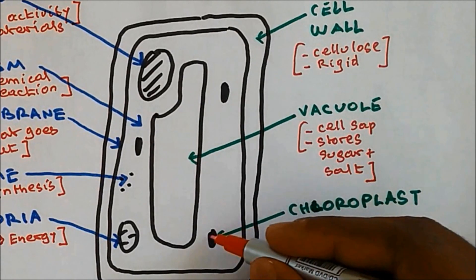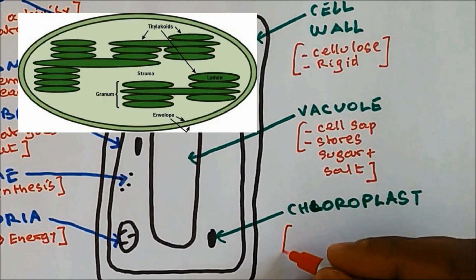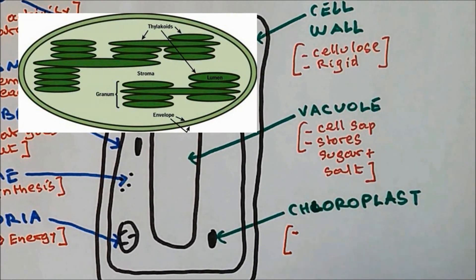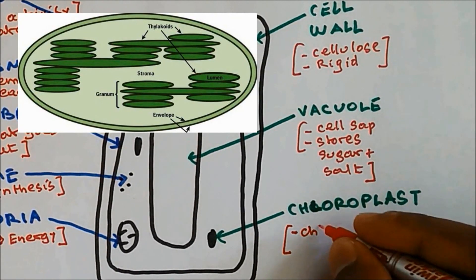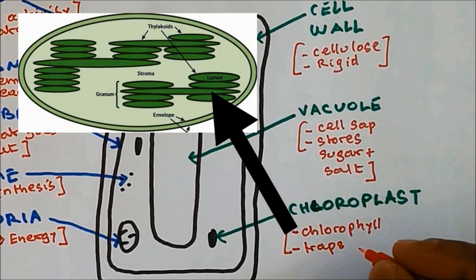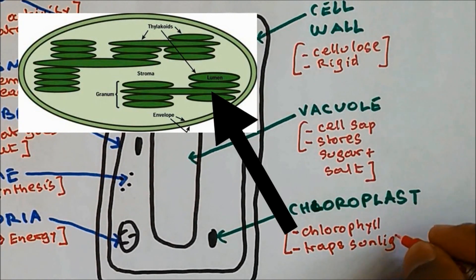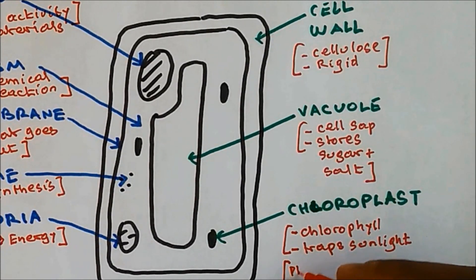Chloroplast. I should have done this with a green pen because chloroplasts have a green color because of the green pigment called chlorophyll. So chloroplasts contain chlorophyll and chlorophyll traps sunlight. The reason why it traps sunlight is for photosynthesis.